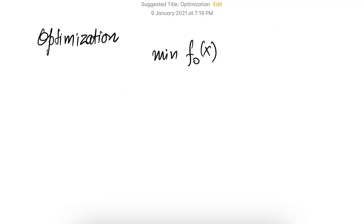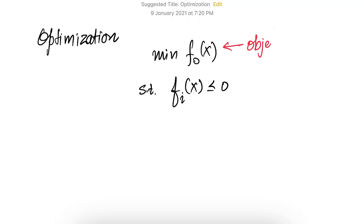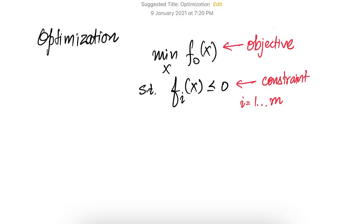An optimization problem is usually written in this way: minimize f0 subject to a constraint of the form fi less than or equal to 0. Here f0 is the objective while fi is the constraint, and there could be many such constraints, so i is equal to 1 to m. The optimization variable is x, which could be a vector in R^n — an n cross 1 vector.